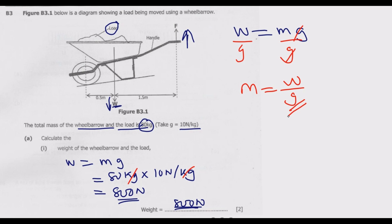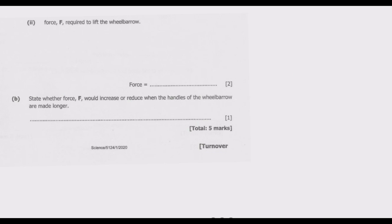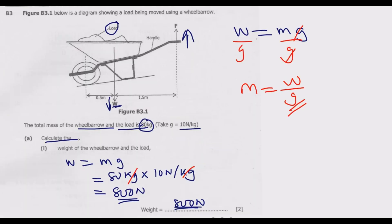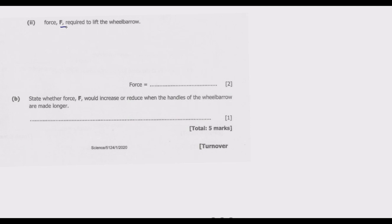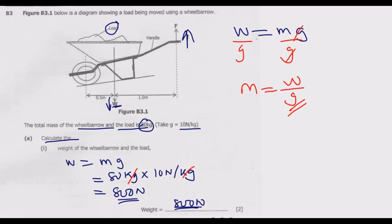Part 2 asks us to calculate the force F required to lift the wheelbarrow. We can see this force pulling upward, and another weight pulling downward, with the center of the pivot between them. To find the force F, we use the principle of moments.